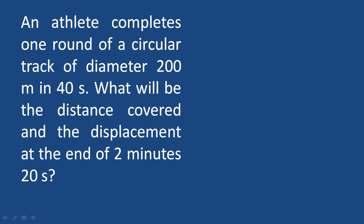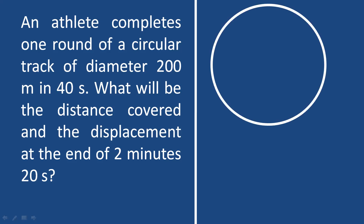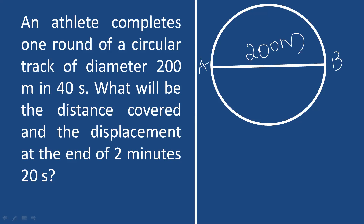One athlete is running on a circular track. The diameter of the circular track is 200 meters, and the athlete completes one full circle in 40 seconds. We need to find the distance and displacement at the end of 2 minutes and 20 seconds. We mark the starting point as A or B on the circular track.